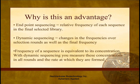So why is this an advantage? The ability to sequence each selection round represents a profound change in our approach to analysis. With traditional endpoint sequencing, our analysis is entirely based on the relative frequency of each sequence in the final selected library. With dynamic sequencing, we're able to analyze the changes in frequencies over selection rounds, as well as the final frequency. If we consider the frequency of a sequence as equivalent to its concentration in the library, then the traditional approach provides an estimate of this concentration at the final round.